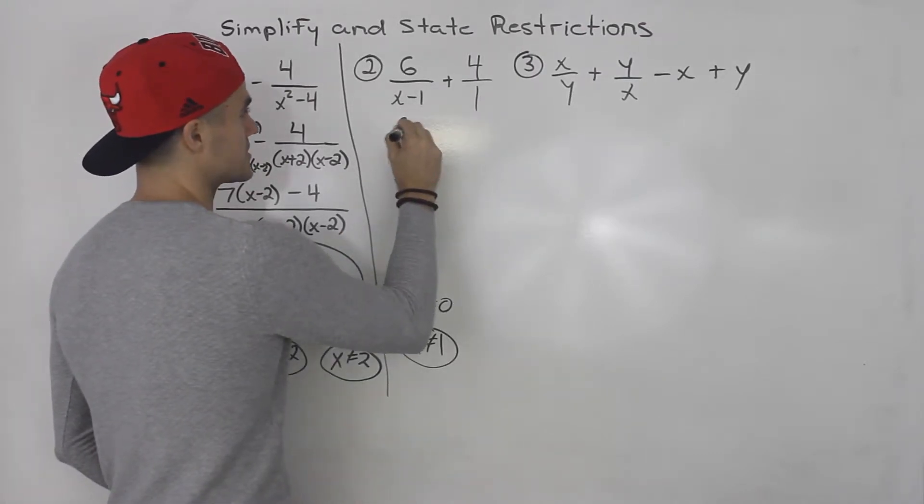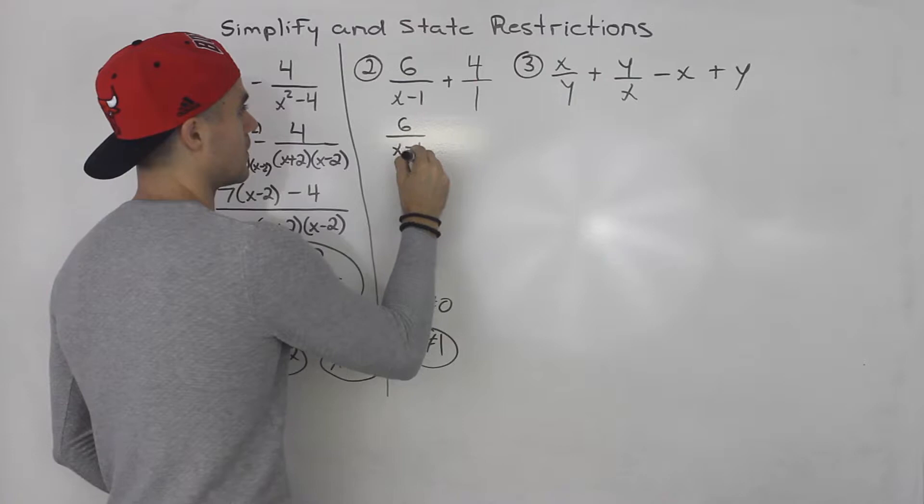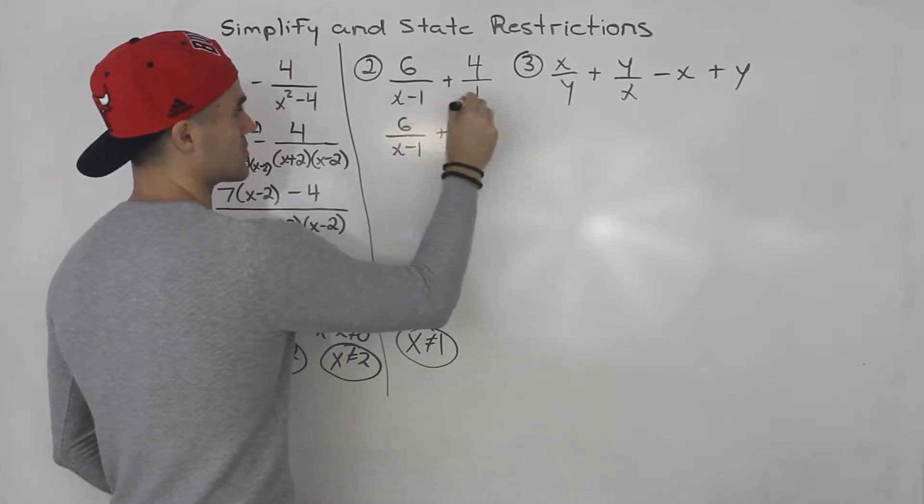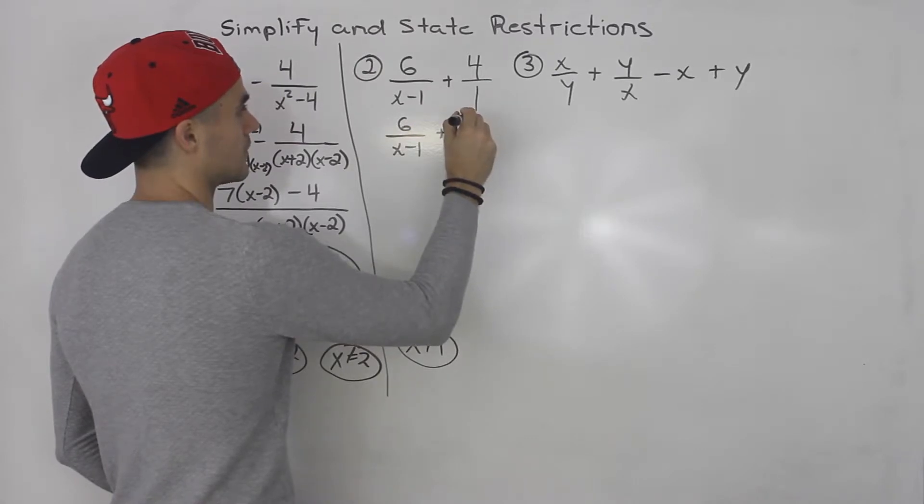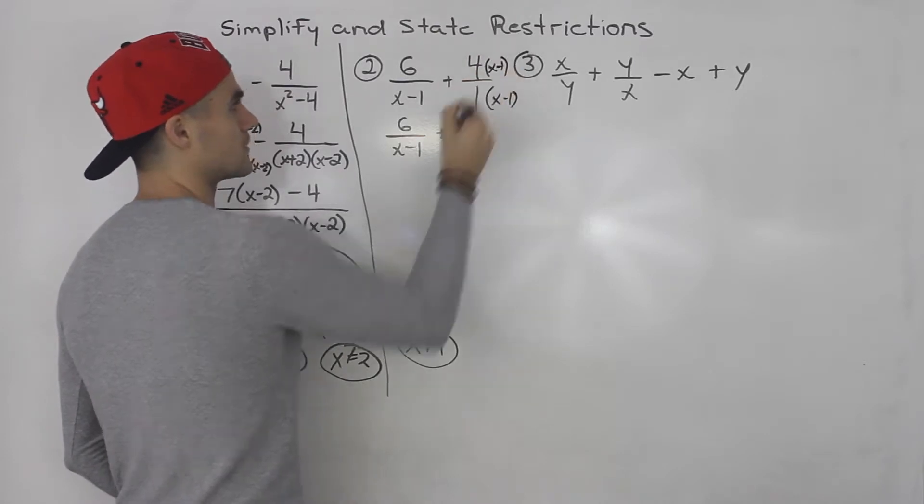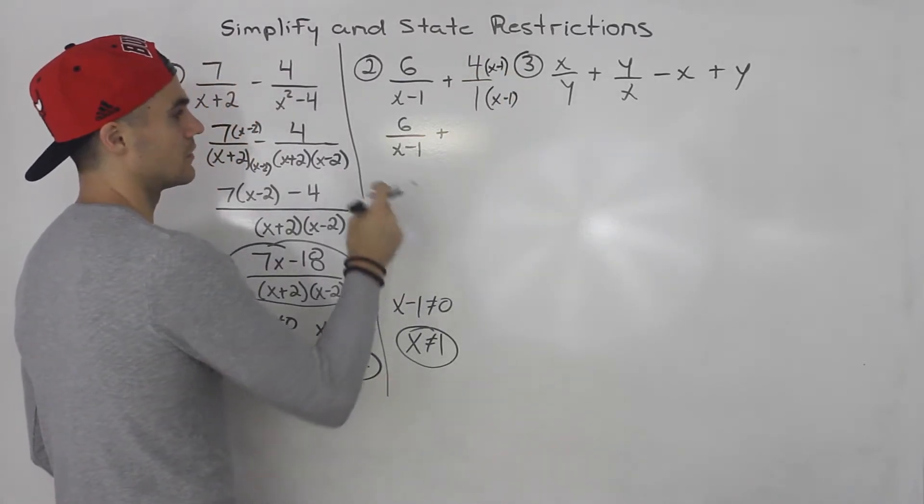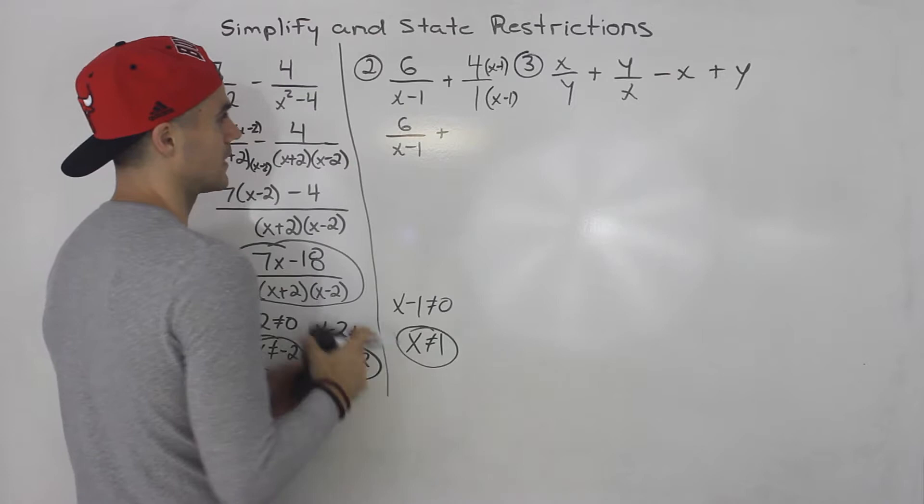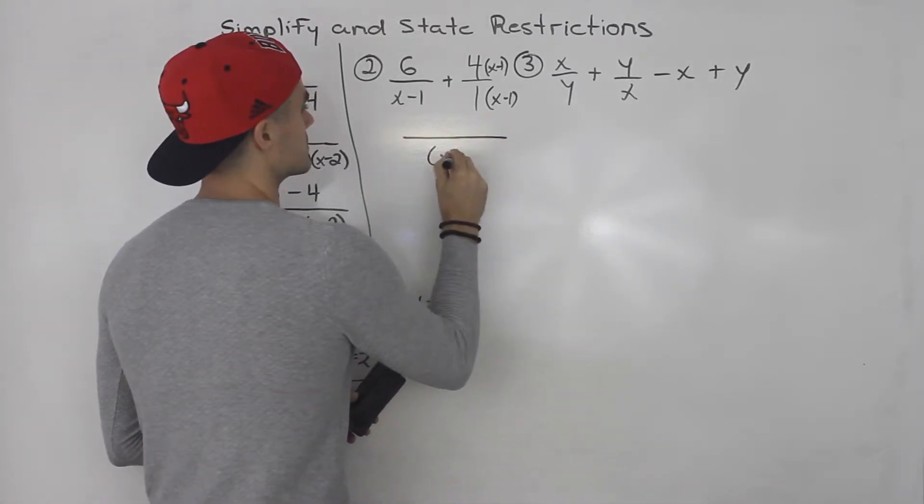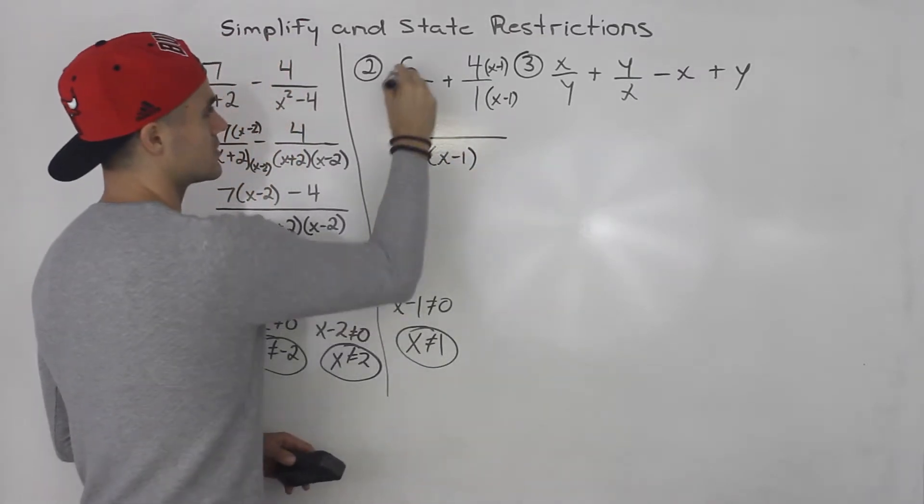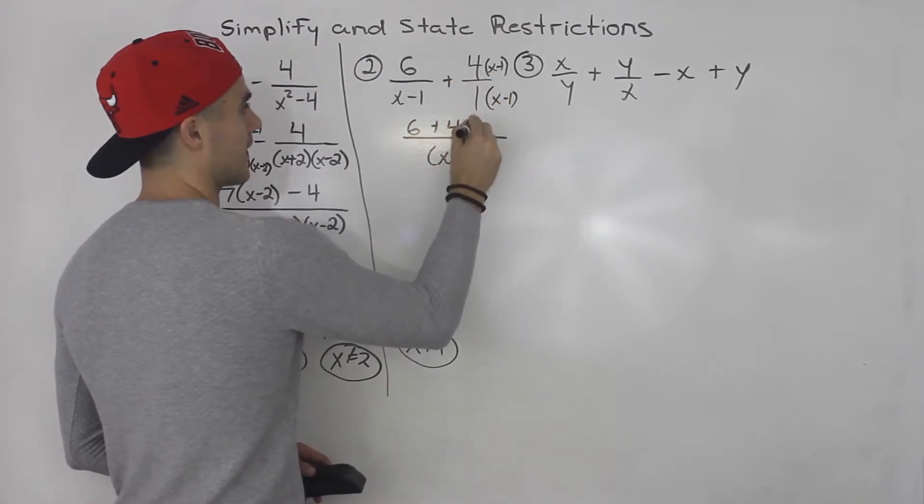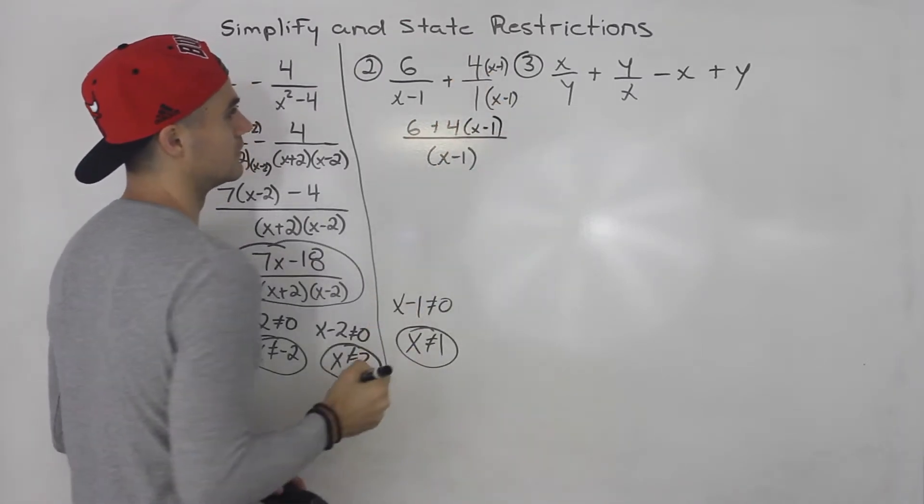So here we'll have 6 over x minus 1 plus what? What's the lowest common denominator here going to be? We can multiply this by x minus 1, and then the top by x minus 1. So the lowest common denominator is actually x minus 1. Let me put this as one fraction. We'll have 6 plus 4 bracket x minus 1.